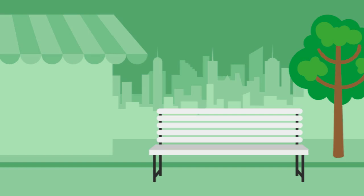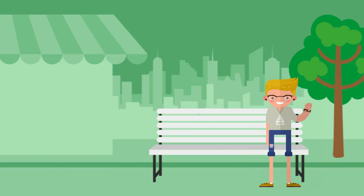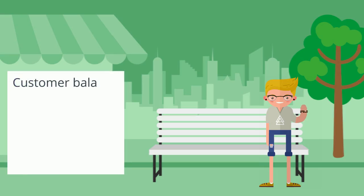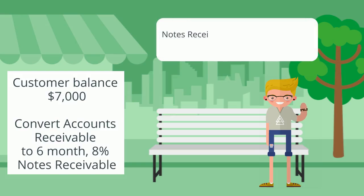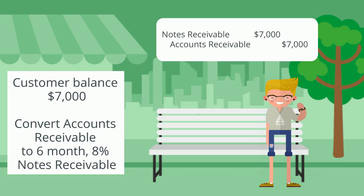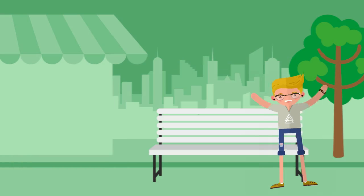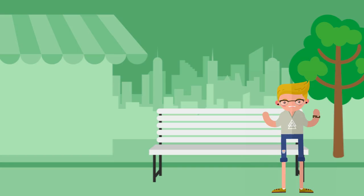Let's walk through a notes receivable example. Assume we agree to extend a note to a customer to replace an existing unpaid accounts receivable balance. The customer currently has a balance of seven thousand dollars and we agree to give them a six-month, eight percent note. We would convert this account to a note by debiting notes receivable for seven thousand dollars and crediting accounts receivable for seven thousand dollars. We've now taken the customer's accounts receivable off our records and created a notes receivable for the same amount.